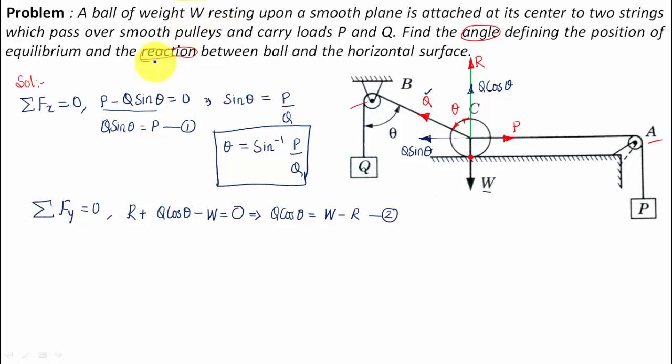What we want right now is this reaction R. This is something that we have to calculate. Right now what I'm going to be doing is I'm going to be squaring and adding equation number one square plus equation number two square. I'm going to obtain Q square sine square theta plus Q square cos square theta is equal to P square plus W minus R square.